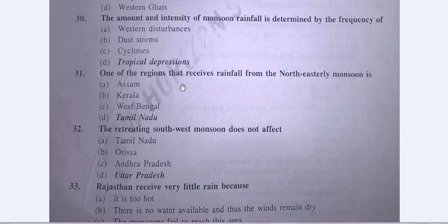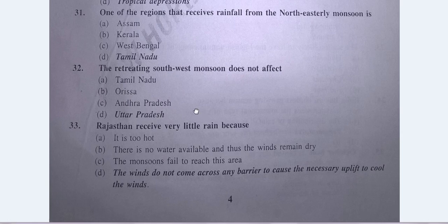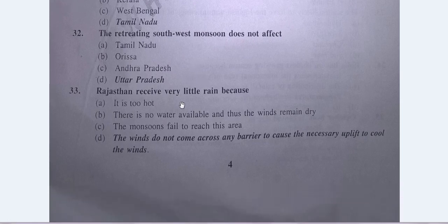Question No. 31: One of the regions that receives rainfall from the north-eastern monsoon is Tamil Nadu — answer is D, Tamil Nadu. Question No. 32: The retreating north-west monsoon does not affect — answer is D, Uttar Pradesh.